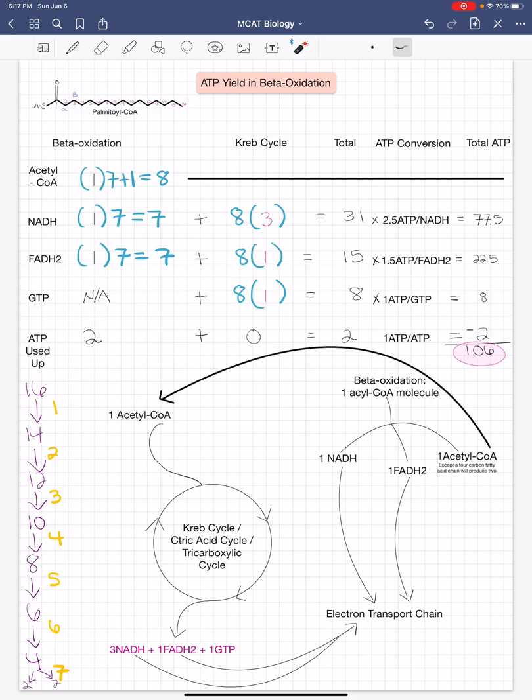For FADH2, each molecule produces 1.5 molecules of ATP. So we're going to multiply 15 molecules of FADH2 by 1.5, which will give us a total of 22.5.